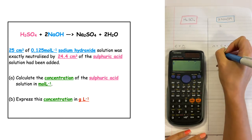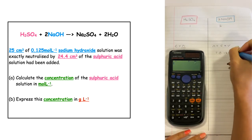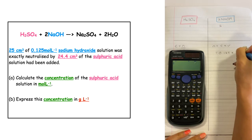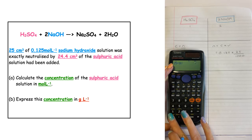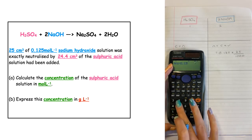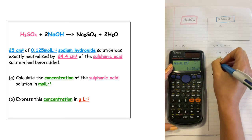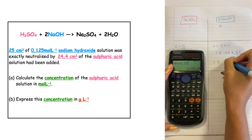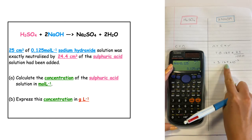The concentration we've been given is 0.125 moles per liter, times by the volume 25, but we divide by a thousand to convert it into liters. So 25 divided by a thousand times by 0.125 gives us the number of moles as 3.125 times 10 to the minus 3. This is the number of moles that actually reacted.